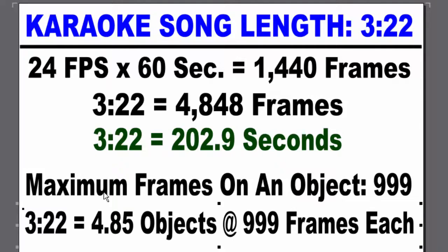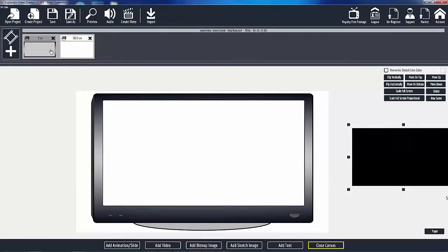The issue with using text or a picture to time it out and just add multiple ones to count up is that the maximum frames you can use on an object is 999. So for the 3 minute, 22 second video, it would take 5 objects at 999 frames each to get the same 3 minutes, 22 seconds. But if the video is 3 minutes 22 seconds and the one I put on the stage is 3 minutes 22 seconds, then one object does it for me because it's the same video. I sat here before I made this video and watched the whole karaoke. I'm a karaoke DJ, but I do not sing.